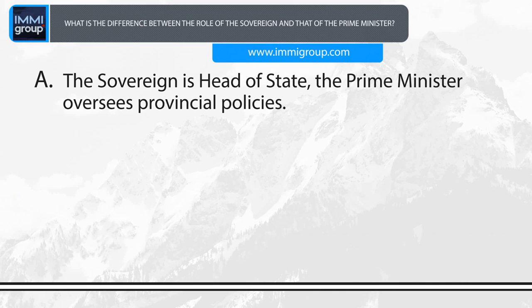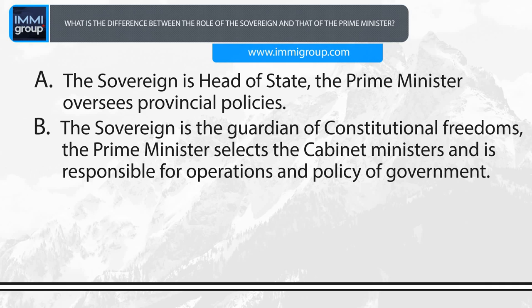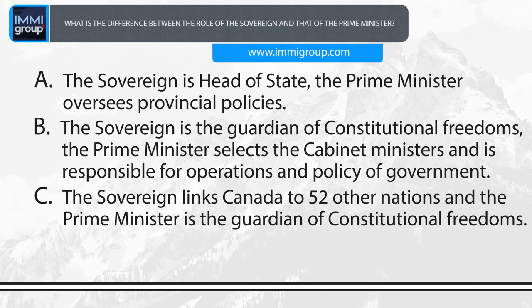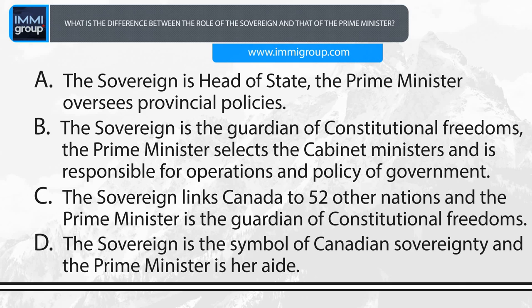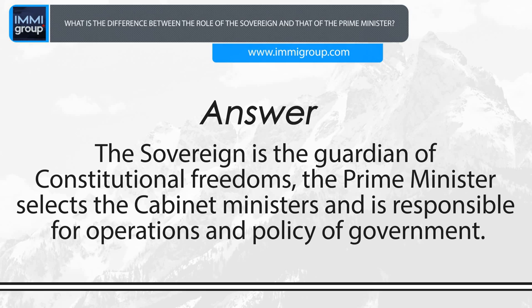What is the difference between the role of the sovereign and that of the Prime Minister? A. The sovereign is head of state; the Prime Minister oversees provincial policies. B. The sovereign is the guardian of constitutional freedoms; the Prime Minister selects the cabinet ministers and is responsible for operations and policy of government. C. The sovereign links Canada to 52 other nations; the Prime Minister is the guardian of constitutional freedoms. D. The sovereign is the symbol of Canadian sovereignty; the Prime Minister is her aid. Answer: The sovereign is the guardian of constitutional freedoms; the Prime Minister selects cabinet ministers and is responsible for operations and policy of government.